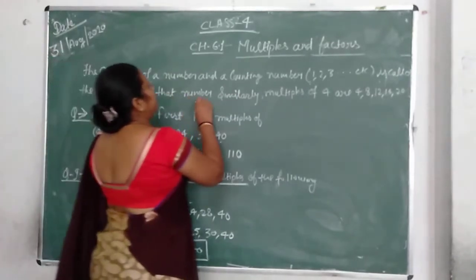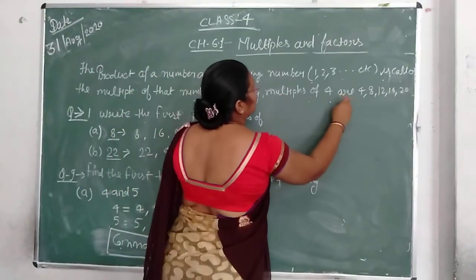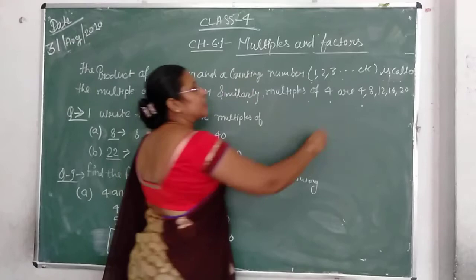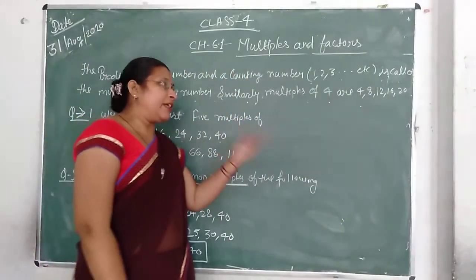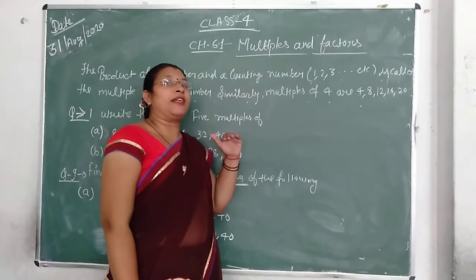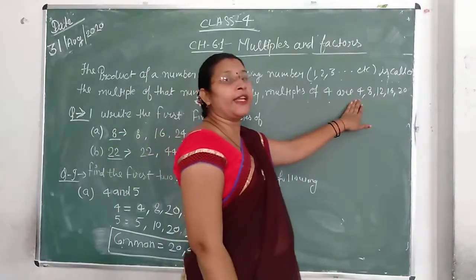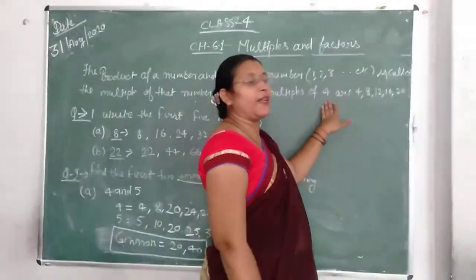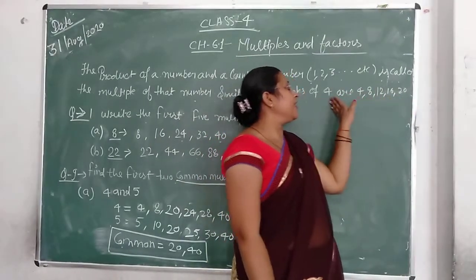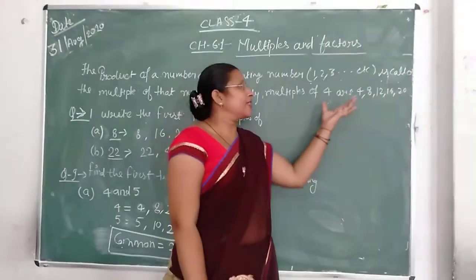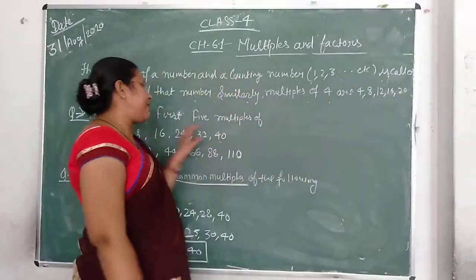That number, similarly, multiples of 4 are 4, 8, 12, 16, 20. These are multiples of 4 - which means these numbers are divisible by 4. 4, 8, 12, 16, 20 are 4's multiples.